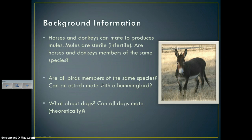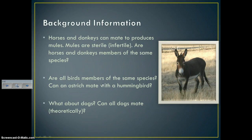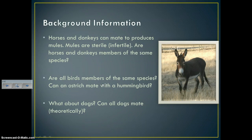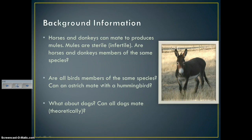Are all birds members of the same species? Could an ostrich mate with a hummingbird? No, so that means they are different species. Different birds are different species — an owl is not the same species as a penguin, for example.